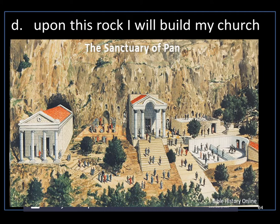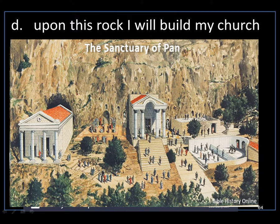This is called the Sanctuary of Pan — it's an artist's rendition of what this used to look like in the day of Jesus. You can see some actual Greek architecture, with temples belonging to certain gods. There is a temple built right at the base of that grotto, and you can see the height of this building and how the grotto goes even above it. And behind it you can see that monolith — that cliff which is called a rock.